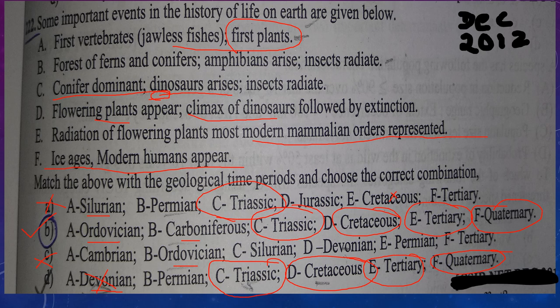Let's verify statement B also: forest of ferns, conifers, amphibians arise. We were confused between Carboniferous and Devonian, because amphibians evolved in Devonian but age of amphibians — meaning amphibians dominated — is Carboniferous. In option B it is given Carboniferous. In option D for statement B it is given Permian, but in Permian mass extinction occurred — so that is not correct. So we can confirm that option B is correct. This is the way to answer the combination type question — there is no need to know all the things.